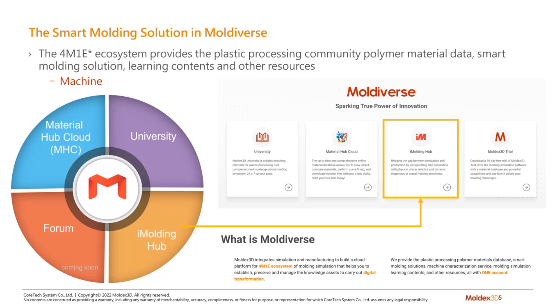This first page is our introduction. The smart molding solution in Modiverse — the 4M1E ecosystem — provides the plastic processing community with resources such as polymer material data, smart molding solutions, and learning content. Currently, Modiverse includes University and Material Hub Cloud (MHC), Form, and iMolding Hub, which I will introduce today.